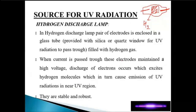The hydrogen gas filled within the tube gains energy because of electricity flowing through the electrodes. Due to high voltage, you get a discharge of electrons flowing from one electrode to the other — the electrons travel from the negative electrode to the positive electrode. The hydrogen molecules acquire energy and then come down to the ground state, emitting UV light in the process. They are comparatively stable and robust, making them one of the most popular sources of UV radiation.